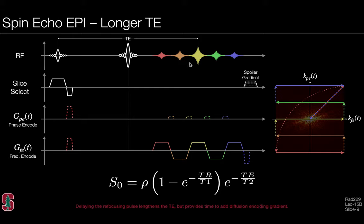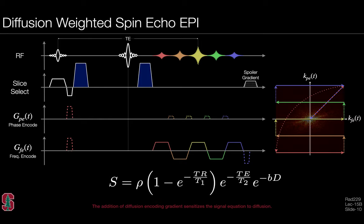The advantage of delaying the 180° pulse is that it opens time to insert two diffusion encoding gradients on either side of the refocusing pulse—both upright, since the spin system is flipped by the refocusing pulse, making the second lobe act as diffusion decoding. This gives us a diffusion-weighted spin echo EPI sequence. The spin echo signal equation is then modified to include T1 and T2 dependence plus an exponential term that depends on both the B-value and the underlying diffusion coefficient of the pixel, sensitizing the signal equation to diffusion.